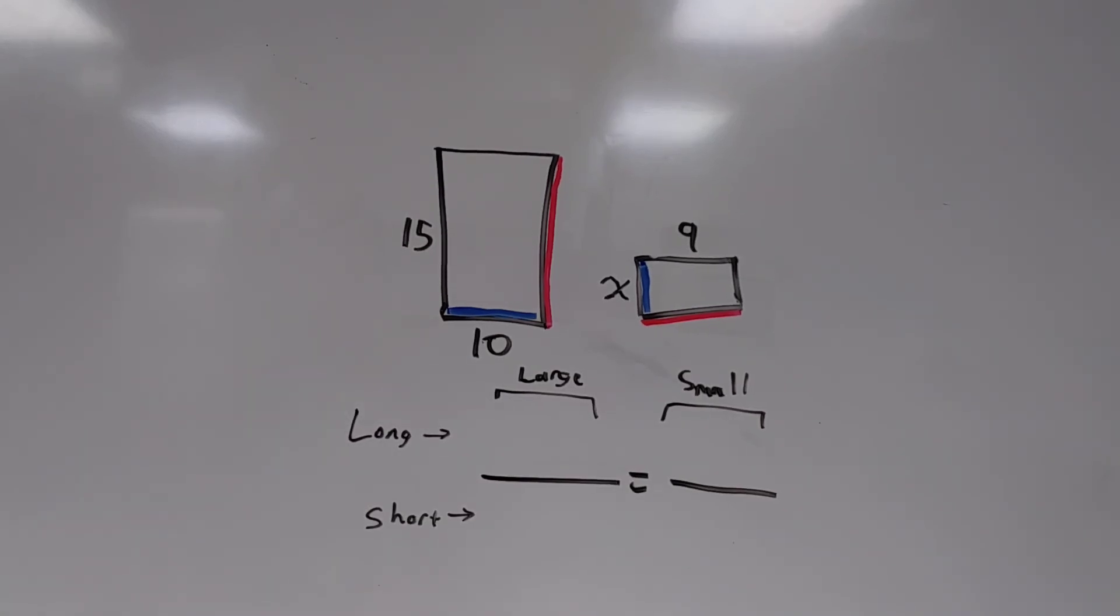And as you build your proportion, remember to stay consistent. We'll keep our large rectangle on the left, our small rectangle on the right. Then we'll put the long sides of those rectangles on top, and the short sides on the bottom. So this means our proportion is going to be 15 over 10 equals 9 over X.